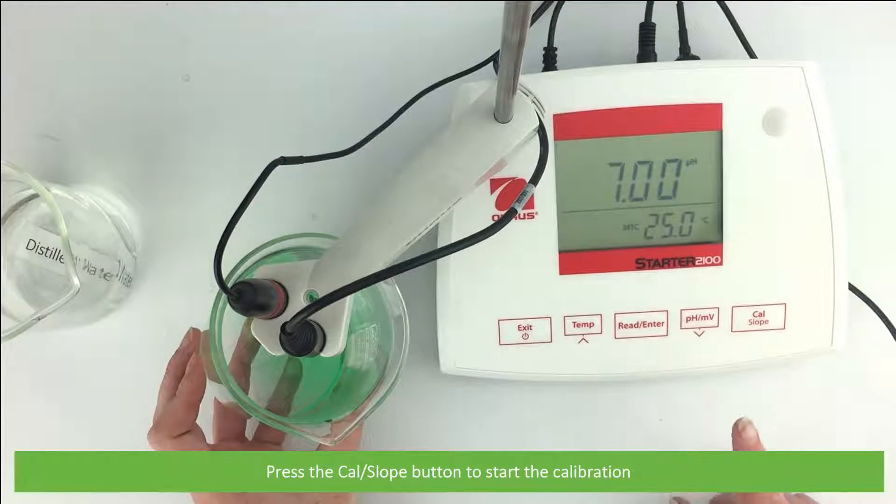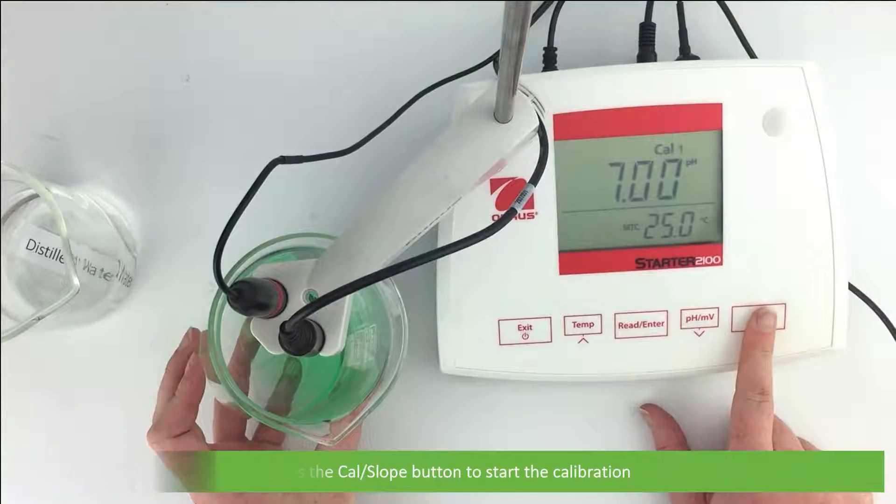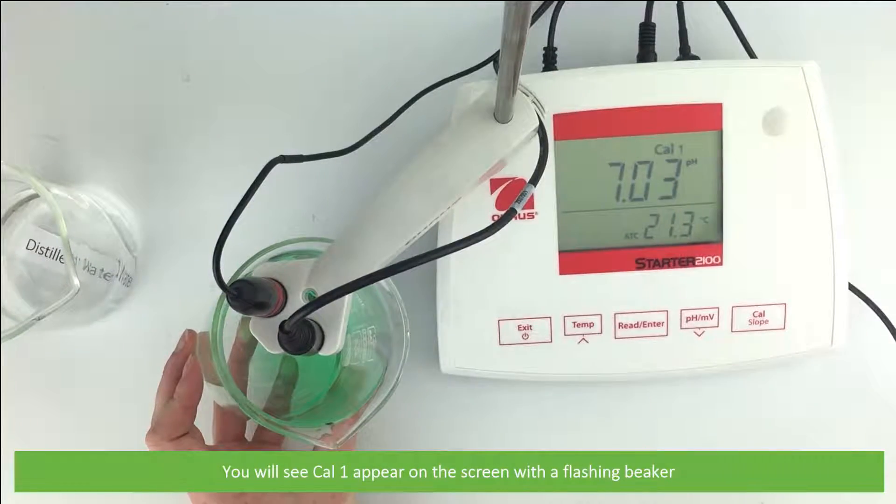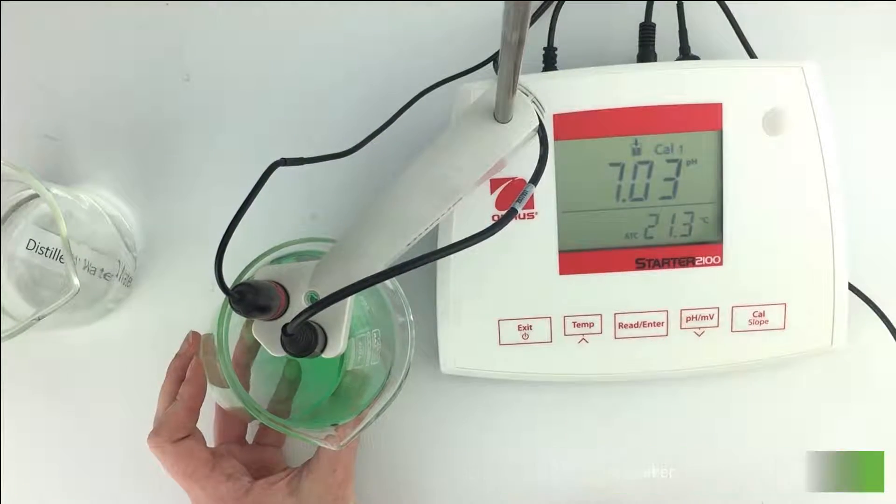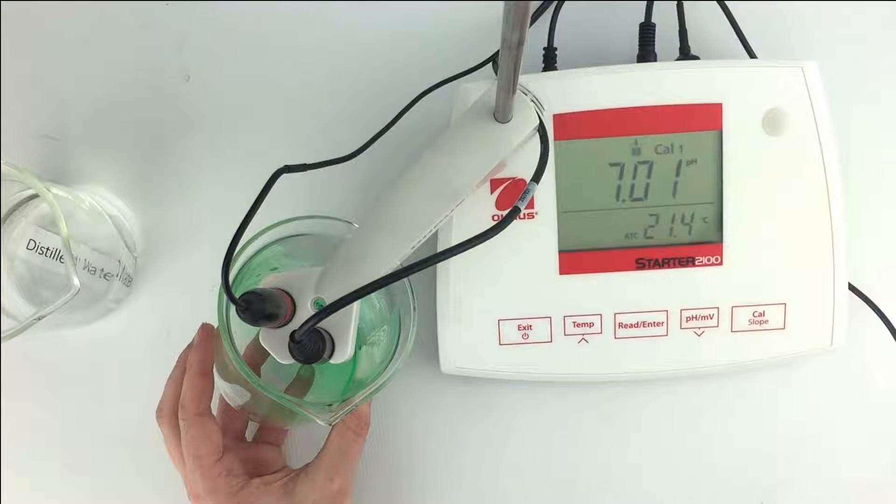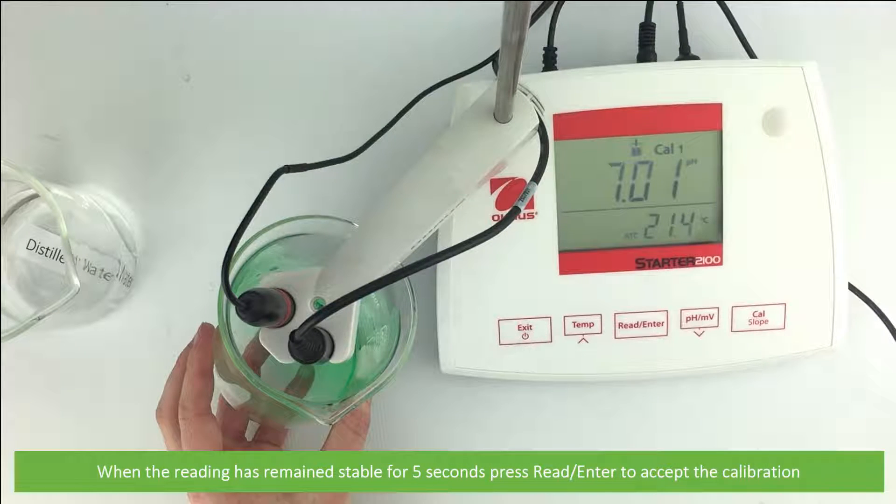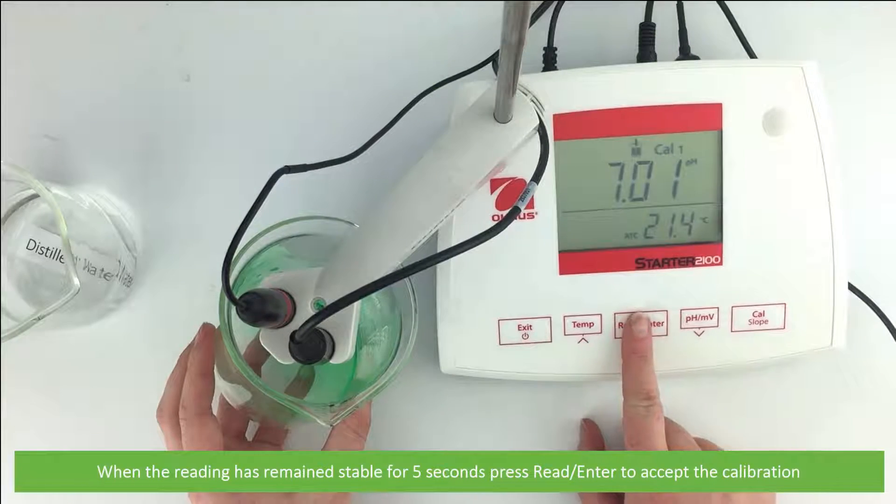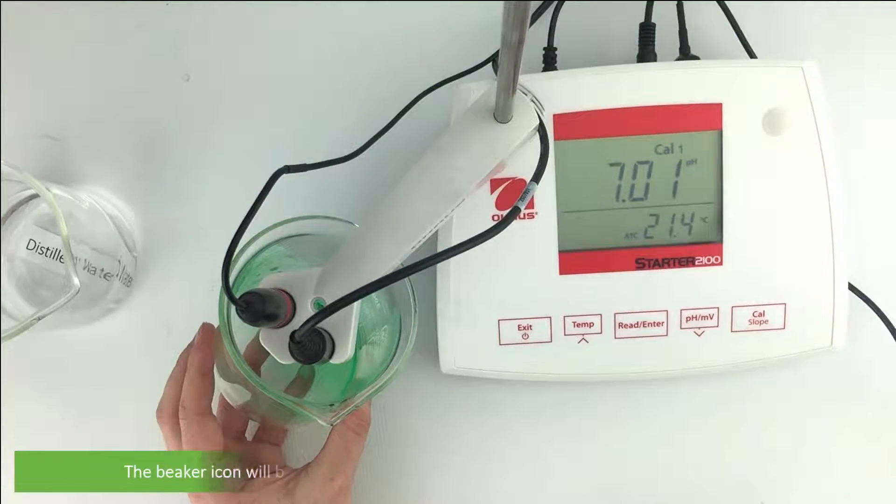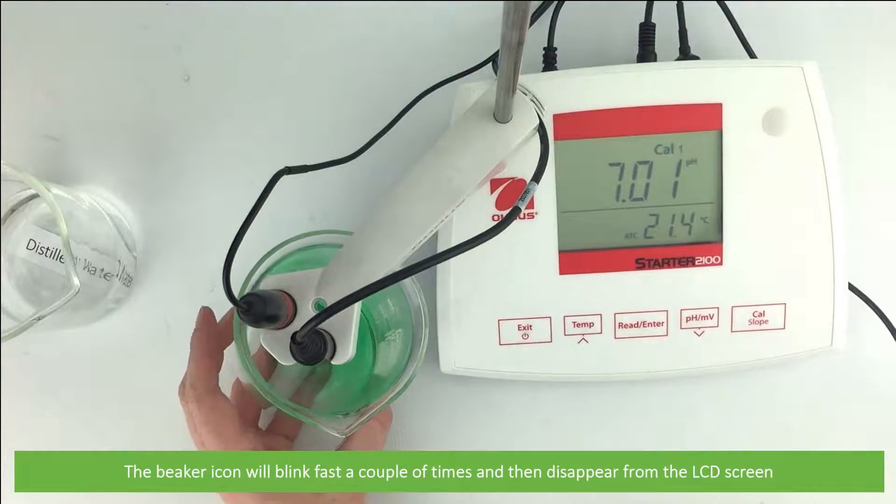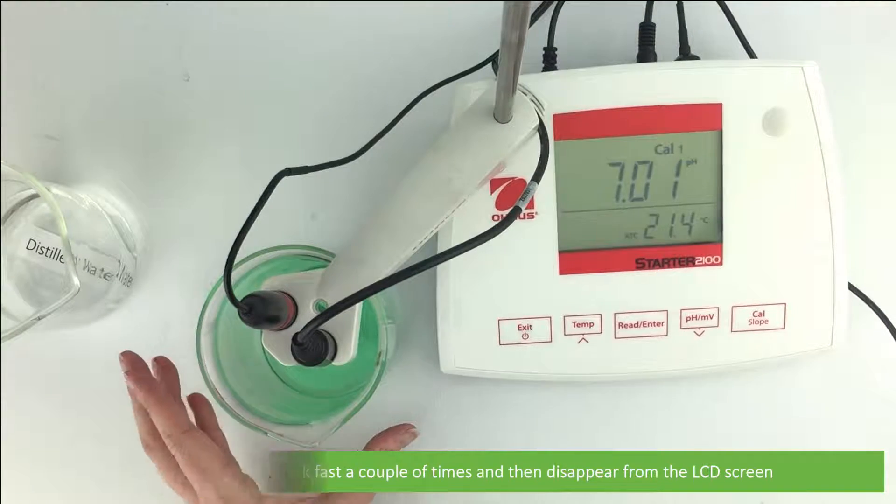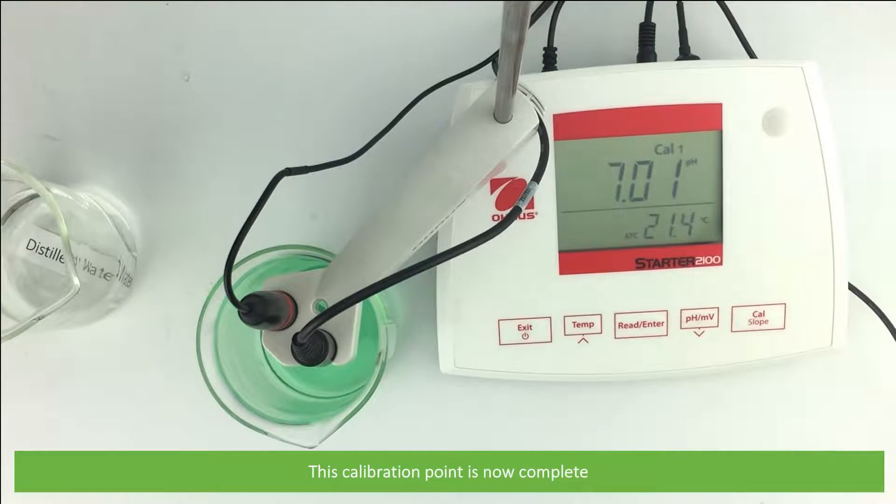Then press the cal slash slope button to start the calibration. You will see cal 1 appear on the screen with a flashing beaker. When the reading has remained stable for five seconds press the read slash enter button to accept the calibration. The beaker icon will then blink fast a couple of times and disappear from the LCD screen. The first calibration point is now complete.